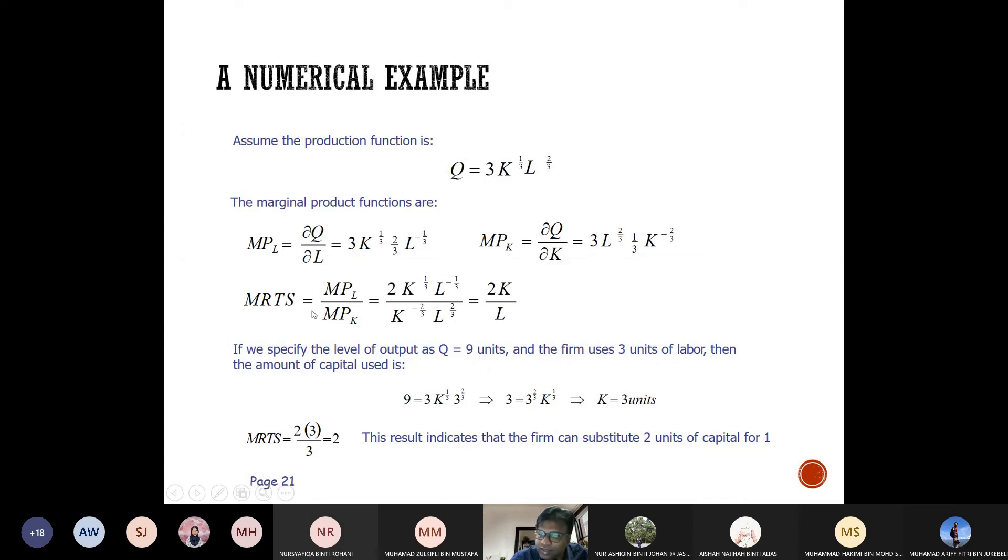In that case, you can still find the MRTS. The MRTS function is 2K/L. As you know, capital K is 3, so substitute into the formula and you get 2.